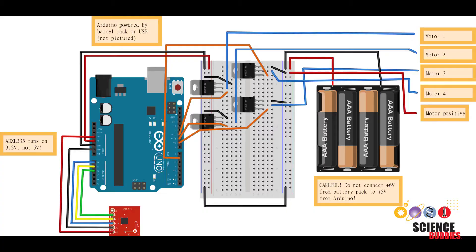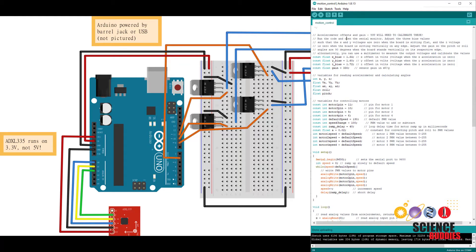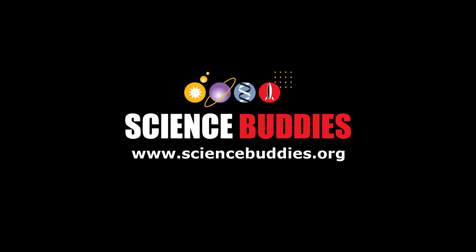A complete parts list, circuit diagram, and working example code are available on the Science Buddies website. Again, you can find all the links in the description below this video. For more drone science projects and thousands of other fun, hands-on science and engineering projects, visit us online at www.sciencebuddies.org.